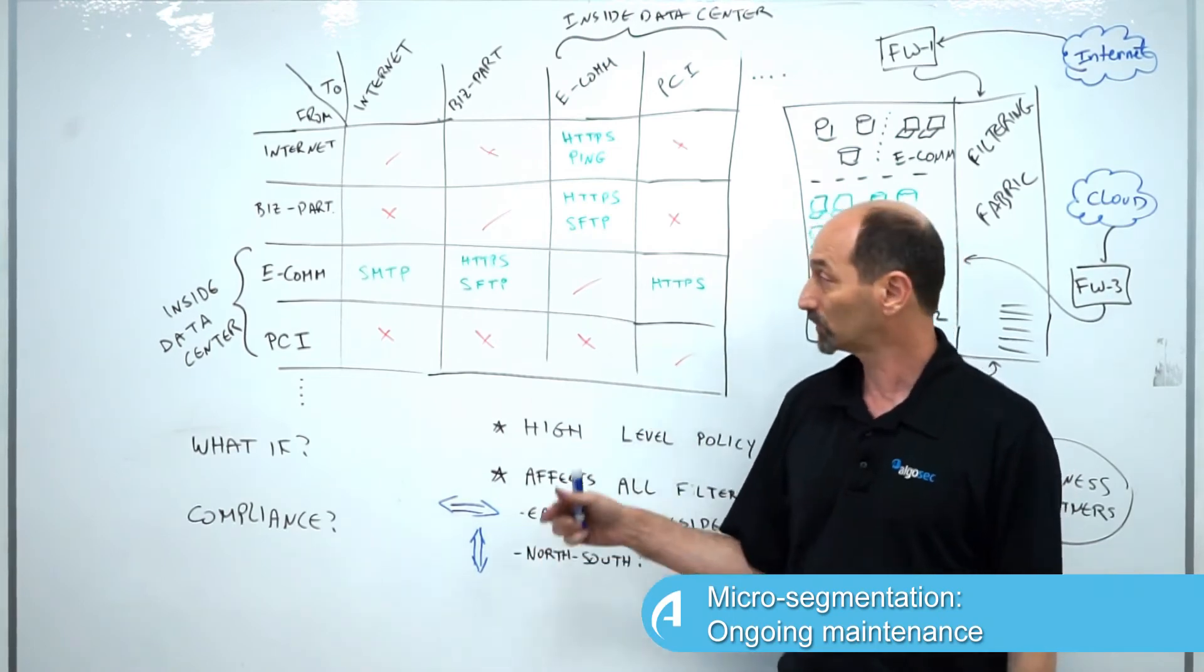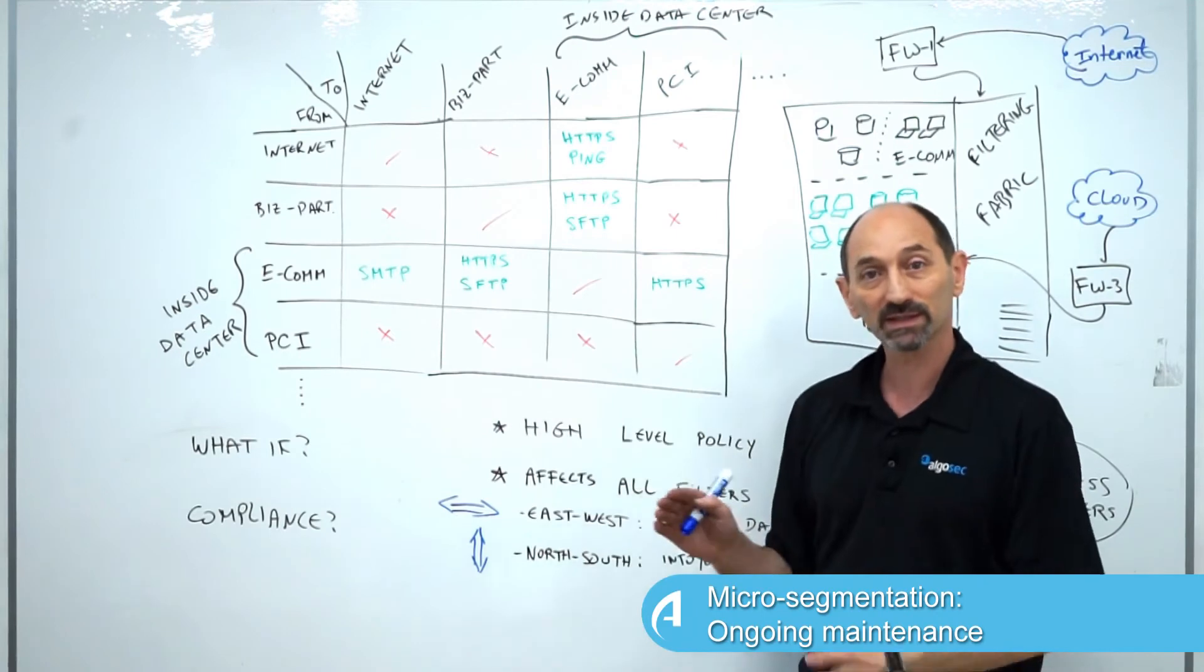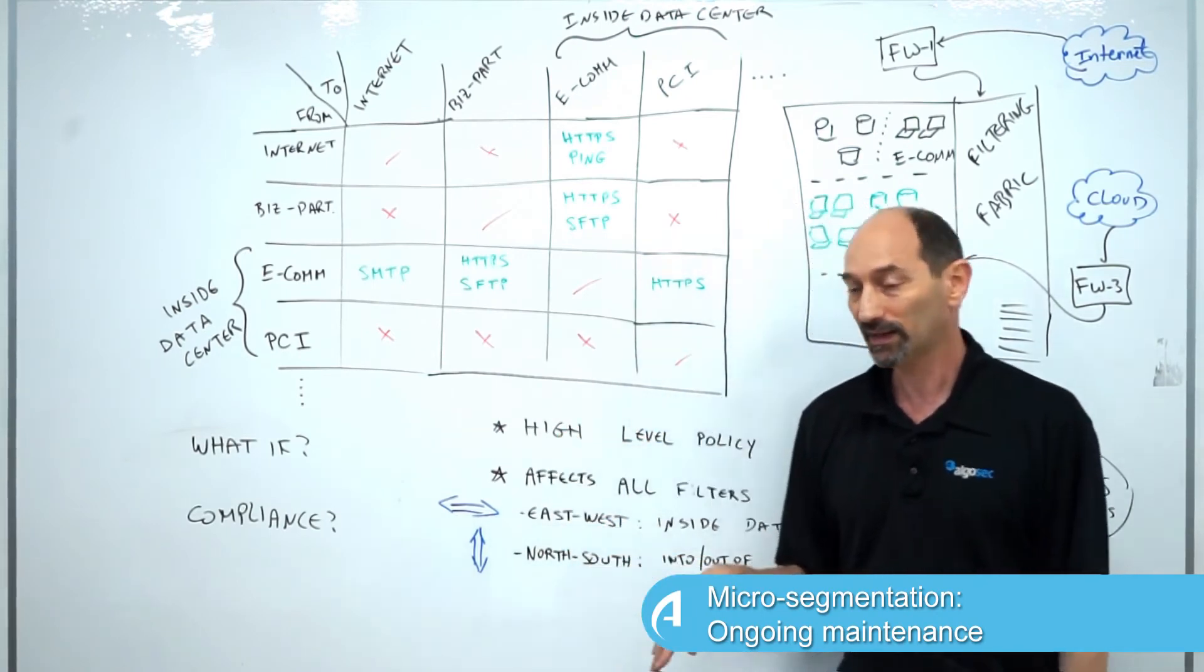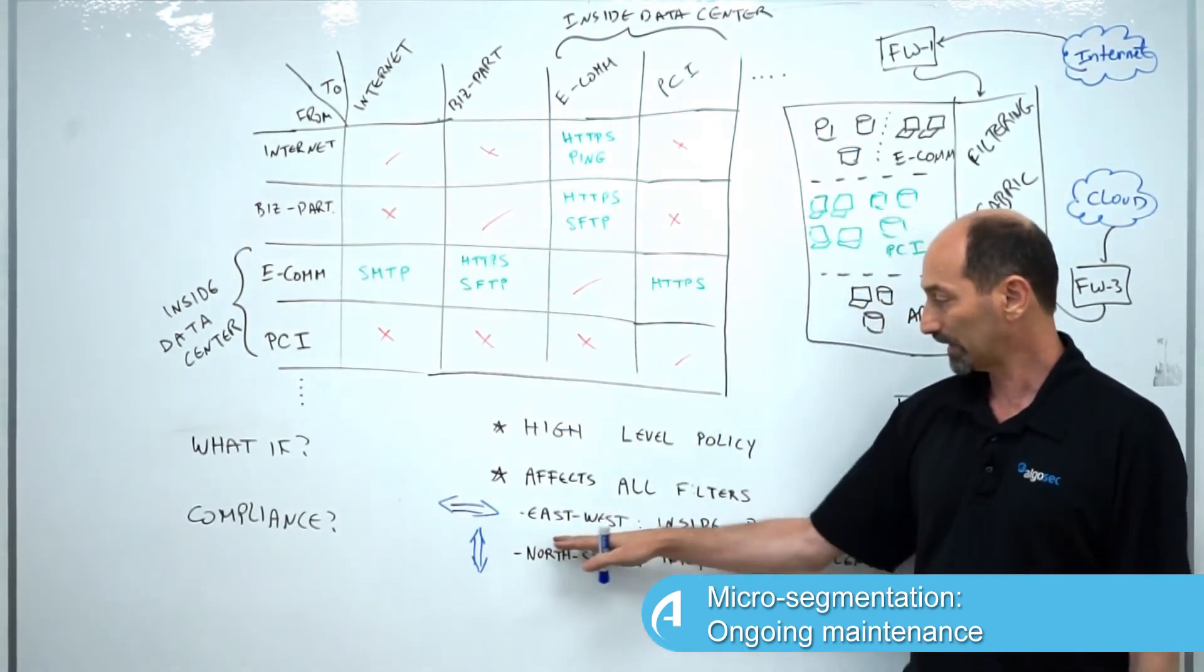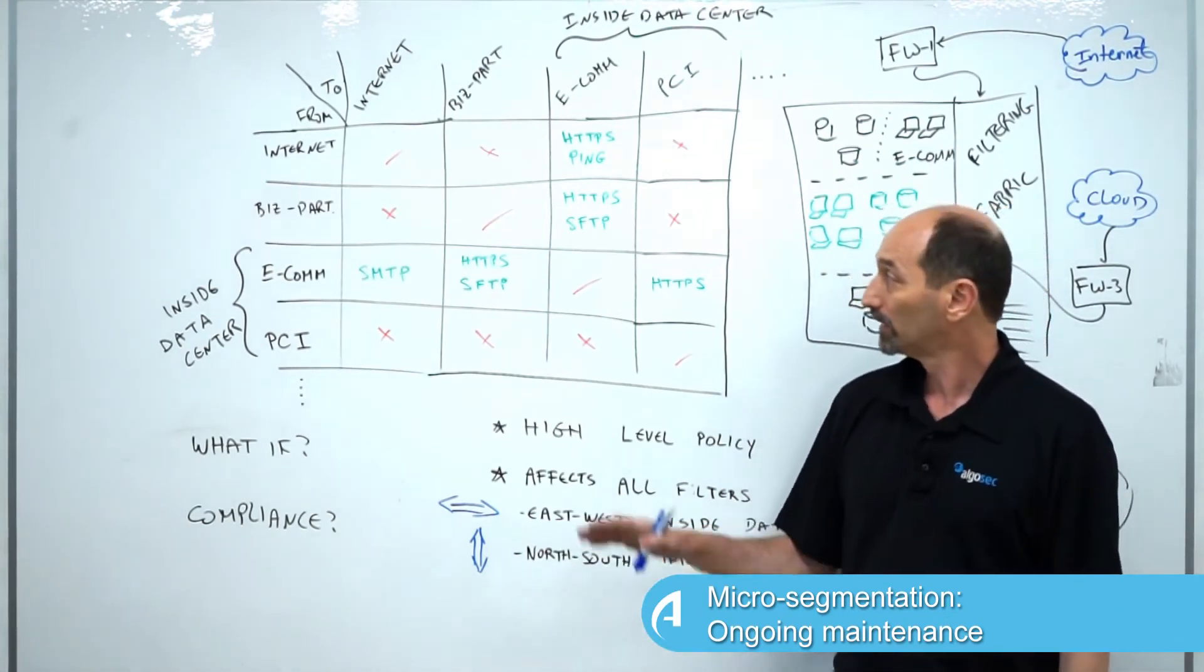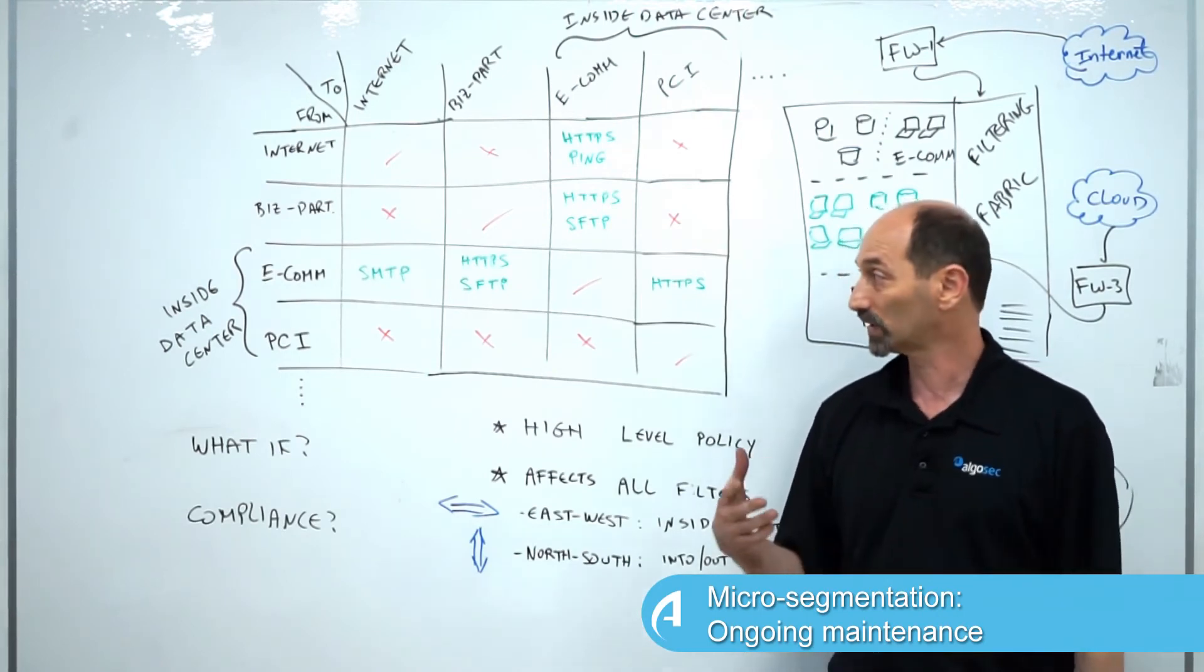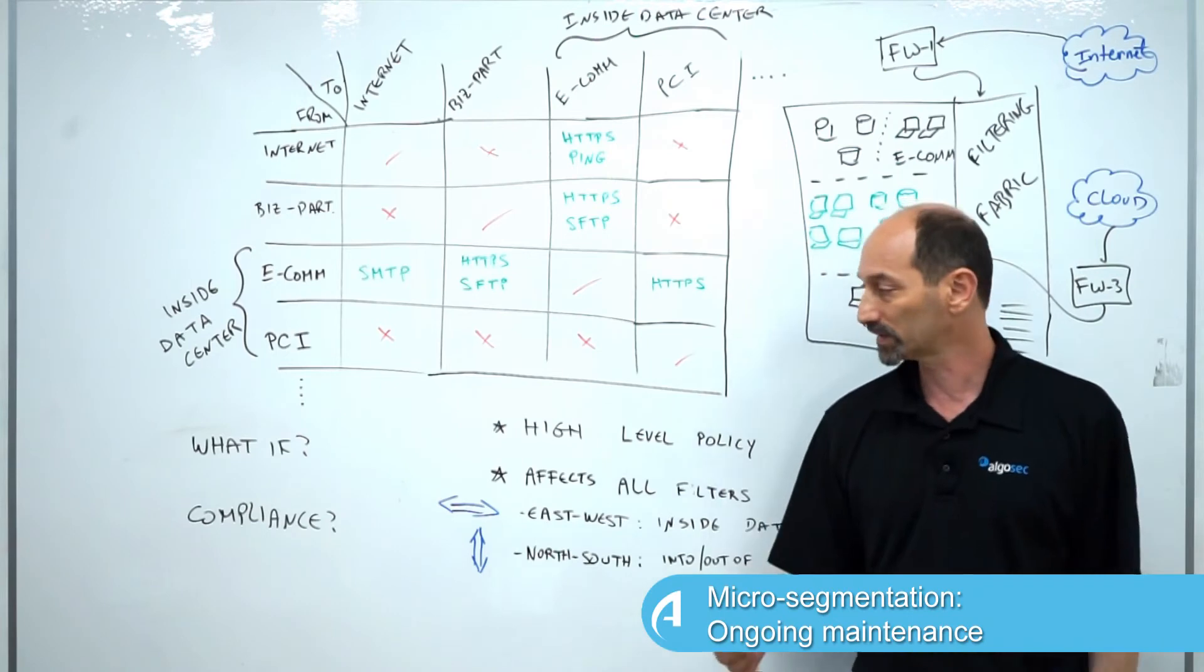However, the traffic from the e-commerce application out to the internet is also governed by one of these firewalls, a traditional firewall that connects the data center outwards. So the fact that we've micro-segmented the data center allows the information security team to write high-level policy that's much more specific.